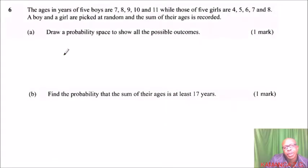Okay, question number six. The ages in years of five boys are 7, 8, 9, 10, and 11, while those of five girls are 4, 5, 6, 7, and 8. A boy and a girl are picked at random and the sum of their ages is recorded. Draw a probability space to show all the possible outcomes.